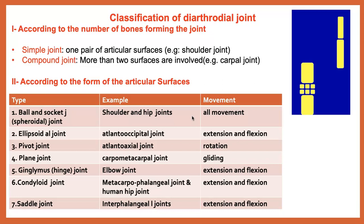Classifying the diarthrodial or synovial joint: according to the number of bones sharing in the formation of the joint, we have the simple joint — meaning at least two bones with two articular surfaces, for example the shoulder joint — and we have the composite joint, meaning more than two articular surfaces, for example the carpal joint or the stifle joint.